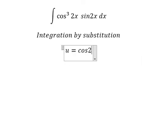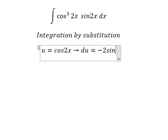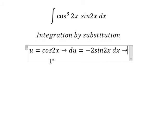cosine 2x. du, we have negative 2 sine 2x dx, because the first derivative of this one, you get this one. Because we don't have negative 2, so we need to divide both sides by negative 2.